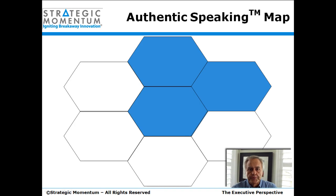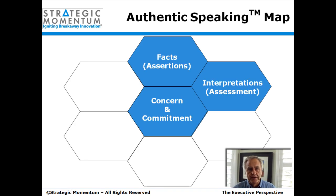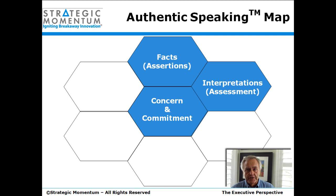In the last post, I spoke about interpretations, and now I want to talk about the interrelationship of facts and interpretations. No one acts on the facts, but they do act on the interpretations that the facts give rise to. I also want to explain how to ground an interpretation, and then talk about the big collapse — what happens when people collapse interpretations with the facts, so that interpretations are masquerading as facts.